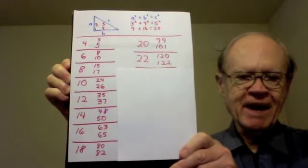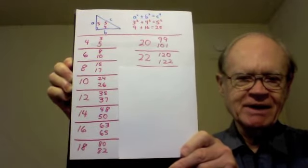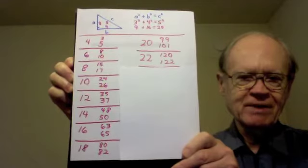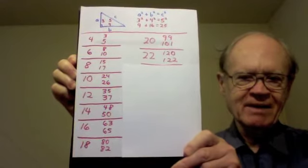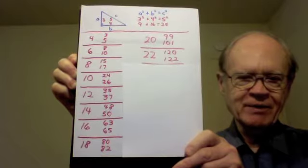If you take any one of these even numbers, any one of these starting numbers, and divide it by 2, then square that, then subtract 1 and add 1, you've got the other two numbers. For example, take the 10.